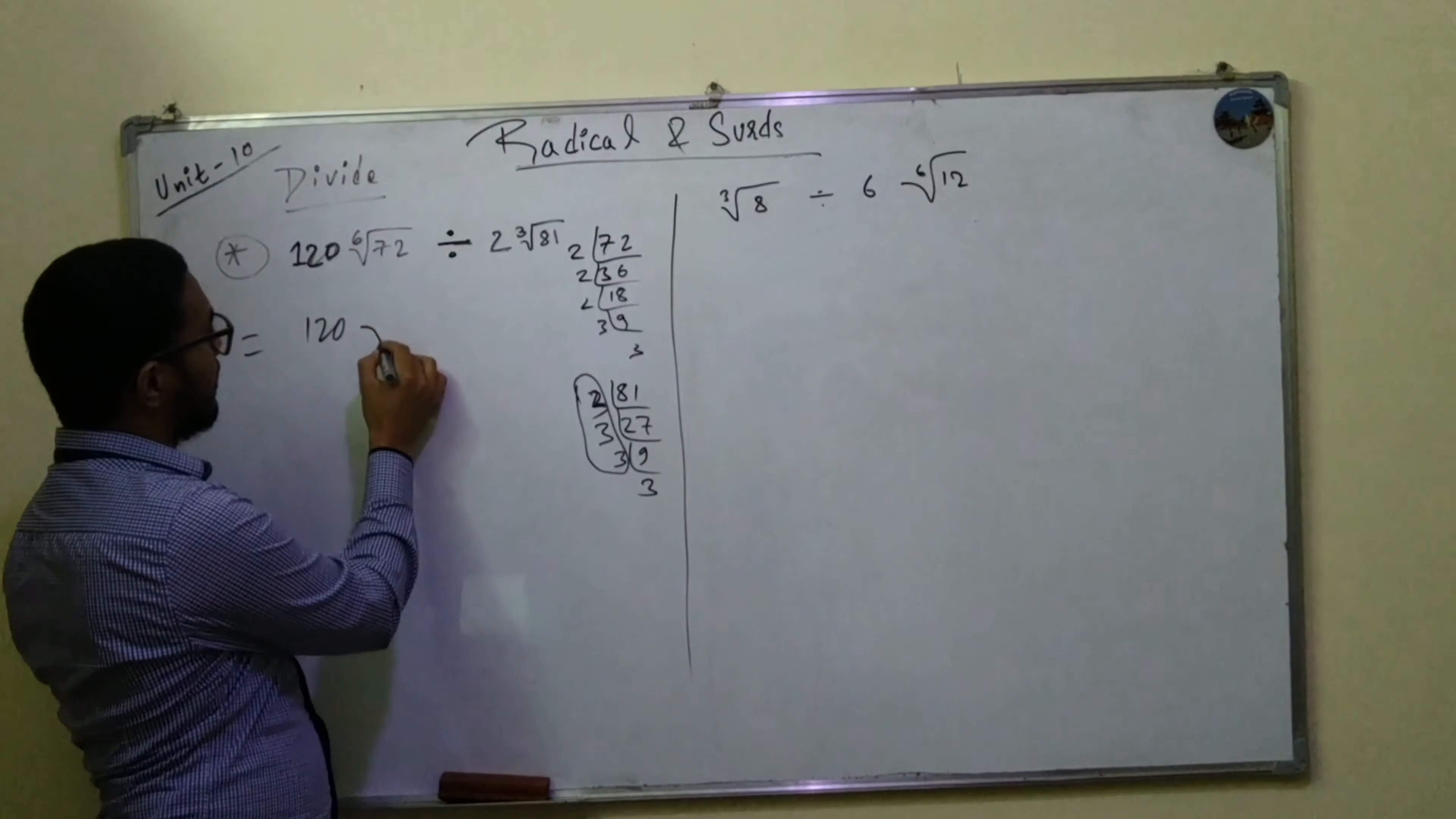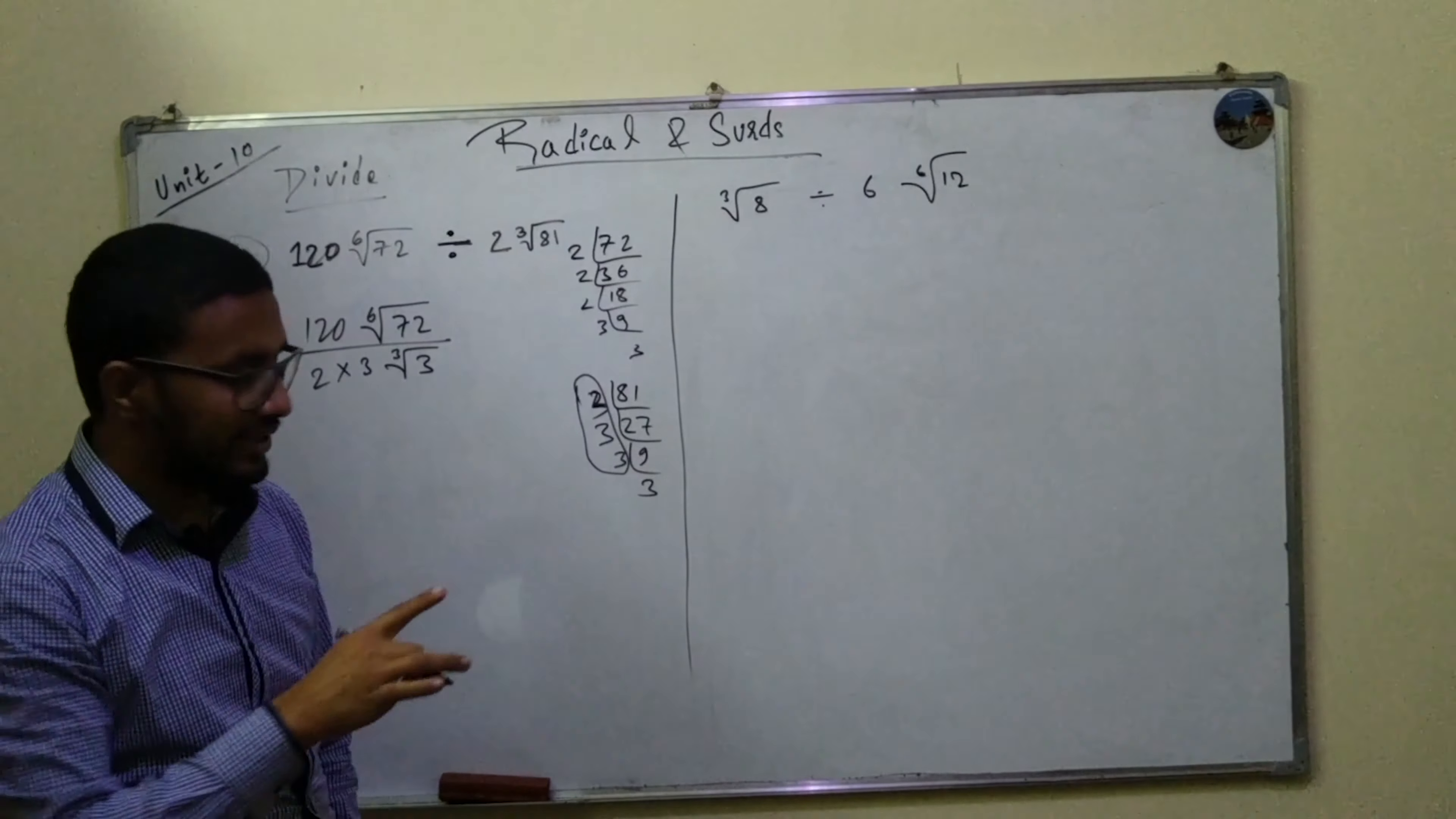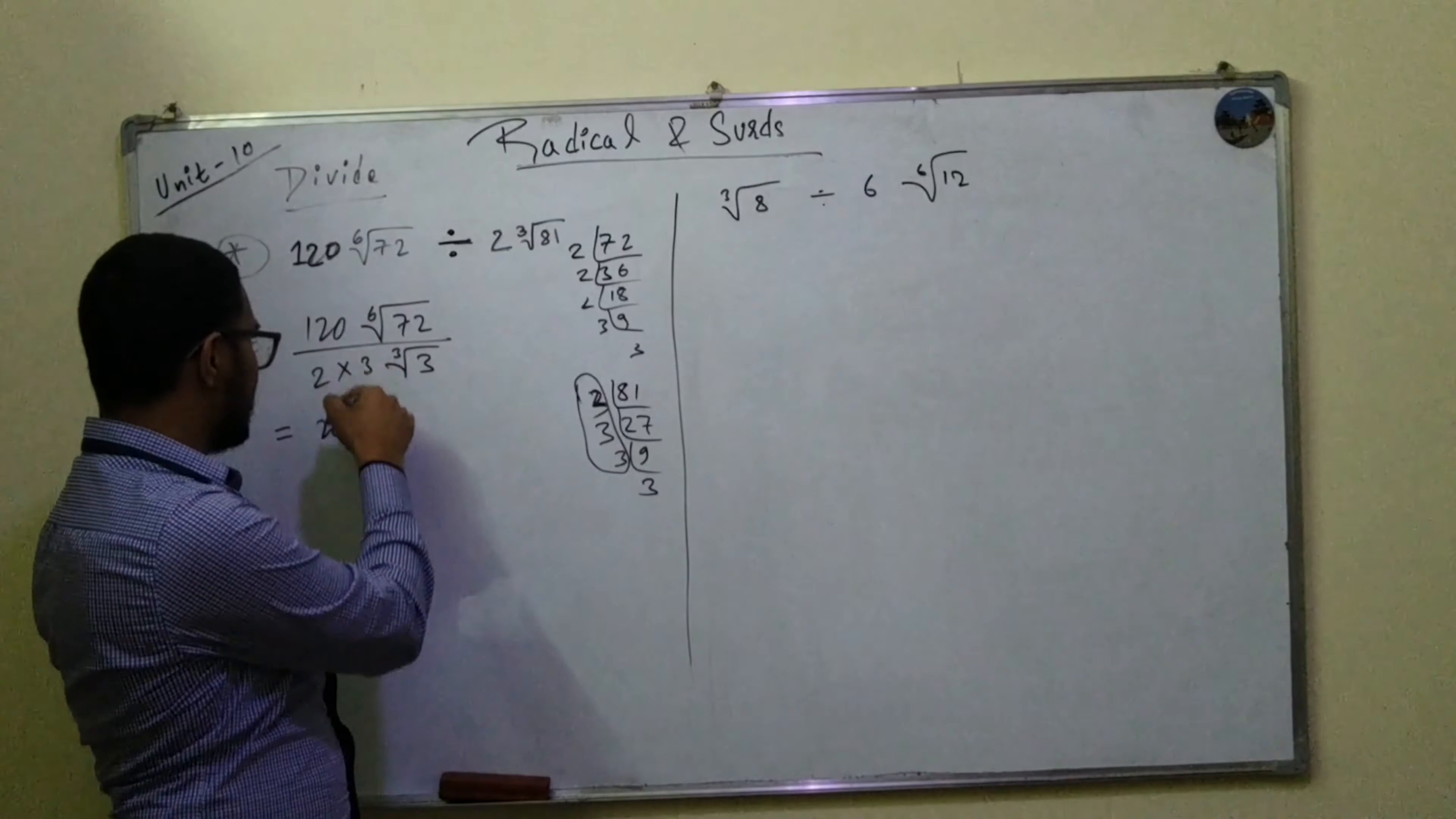And then 3, 9, yeah 3, 3. So one, two, three can be brought out, right? So we can write it in this way. We can write it in this way. After that, what we can do is basically let's just divide it directly with this number.